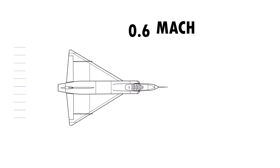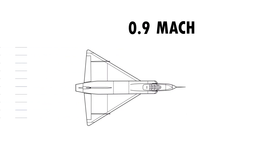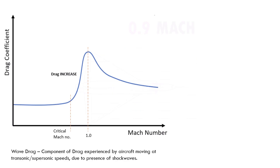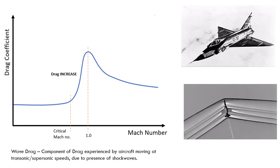In the early 1950s, production fighter designers were trying to push closer and closer to the sound barrier, but try as they might, their planes could not break it. The engineers identified the major challenge to be a dramatic increase in drag, known as transonic drag rise, as planes approached the speed of sound or Mach 1. This was mainly due to the formation of shock waves starting around Mach 0.8, leading to what's called wave drag.